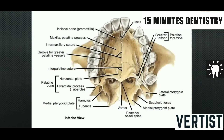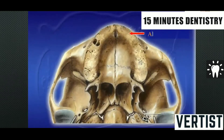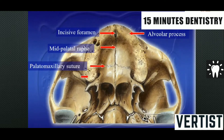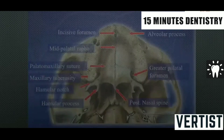In the dentulous patient, landmarks include the incisive fossa, incisive bone, palatal plates, suture, and posterior nasal spine. As age progresses and teeth are lost, in the edentulous patient you get the residual alveolar ridge, mid-palatal raphe, incisive foramen, palatomaxillary suture, maxillary tuberosity, hamular process, hamular notch, posterior nasal spine, greater palatal foramen, and so on.